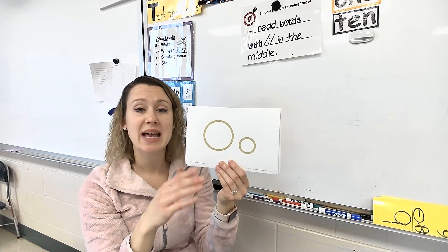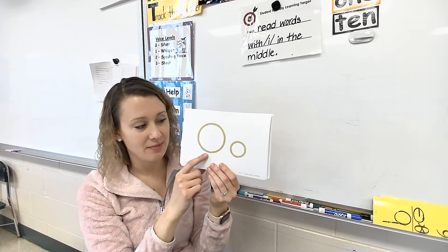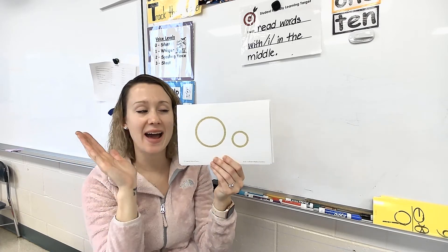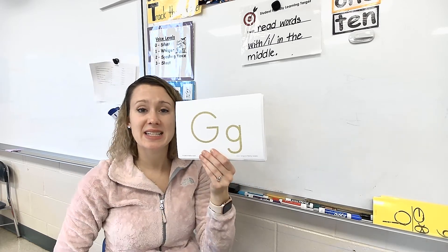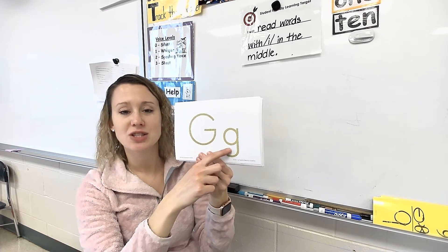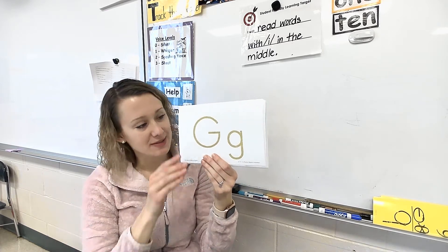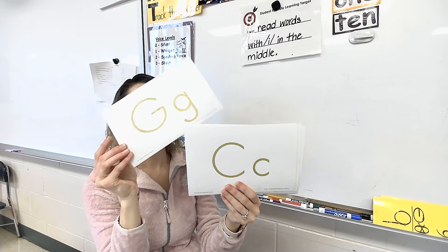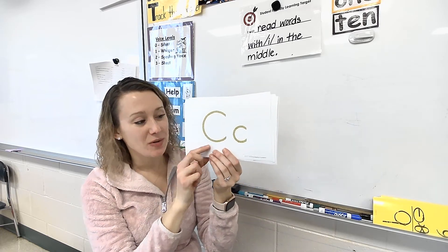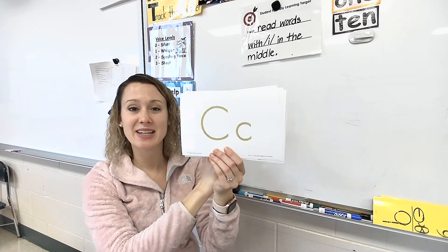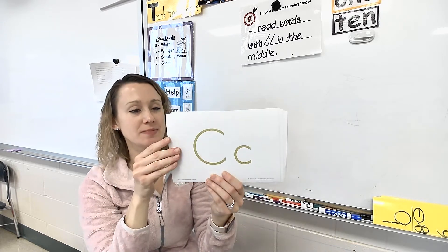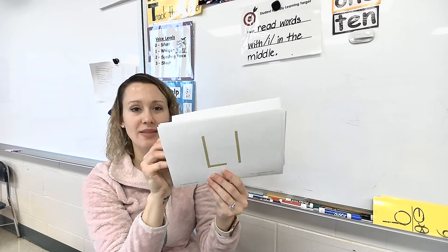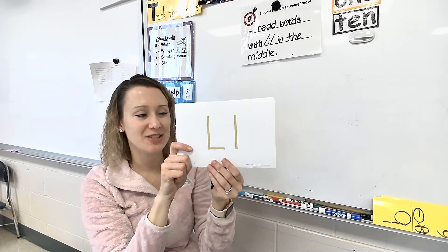Here we go. Ready, set, go — letter O says ah. One more time — letter O says ah. Here we go — letter G says g. One more time — letter G says g. Ready, set, go — letter C says k. One more time — letter C says k. Thank you for doing it with me. That's how you knew all these when I tested you.